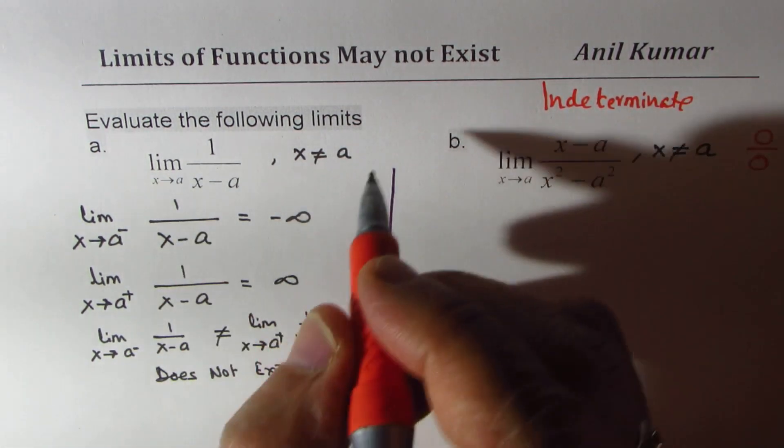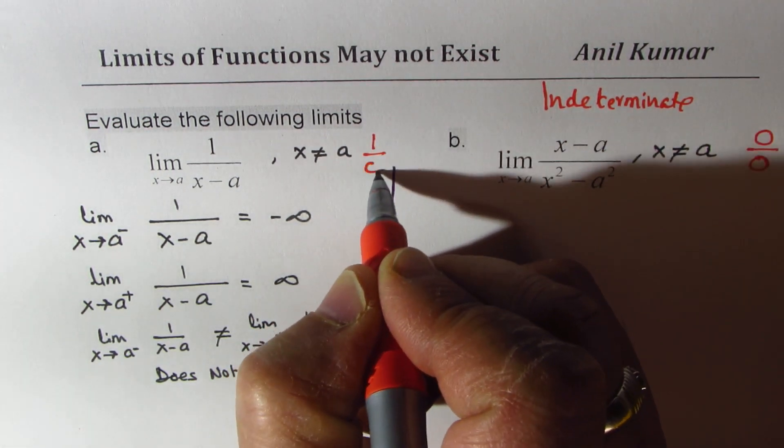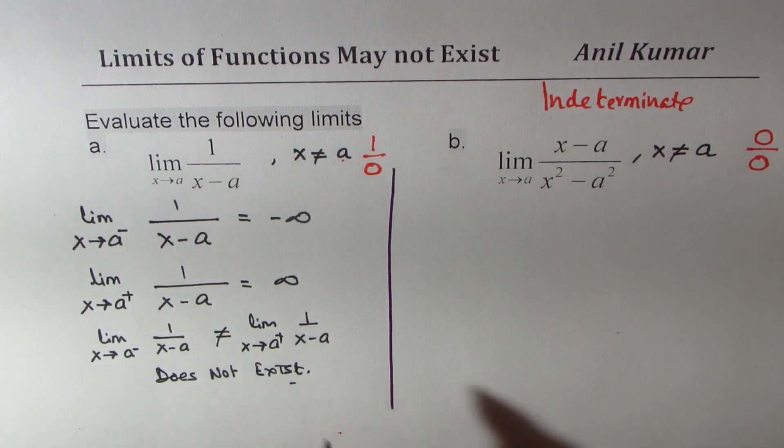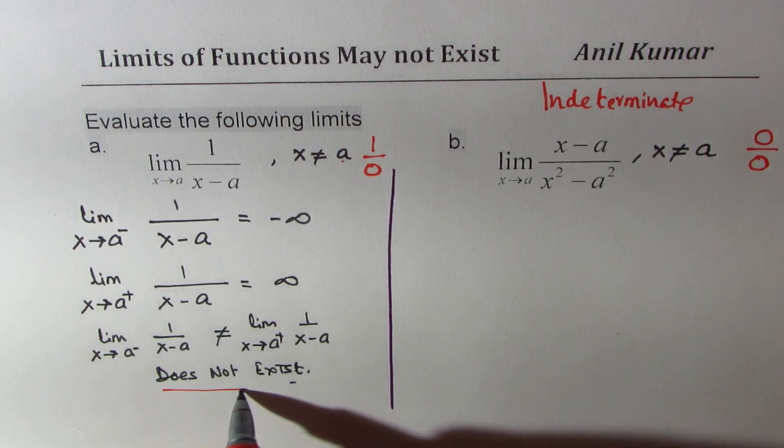In the first case, the situation was, we got 1 over 0, right? If I substitute a, which is undefined, right? So that was, does not exist. Did you see that part?